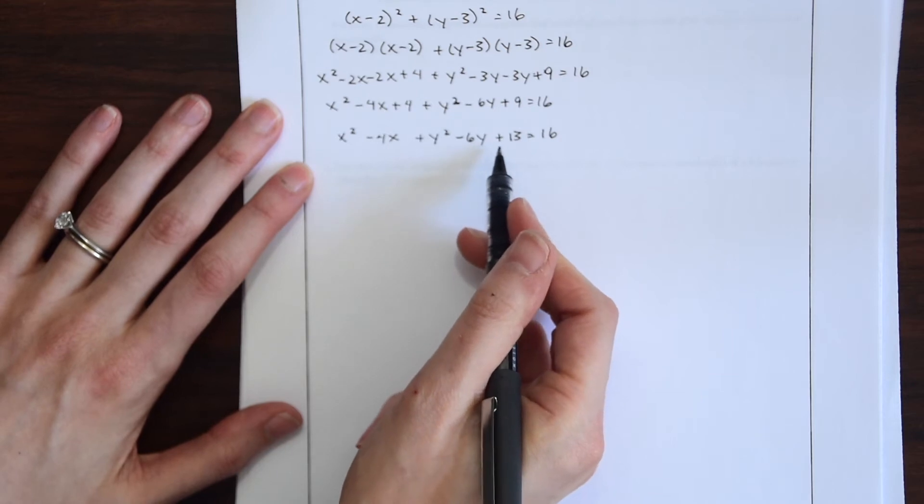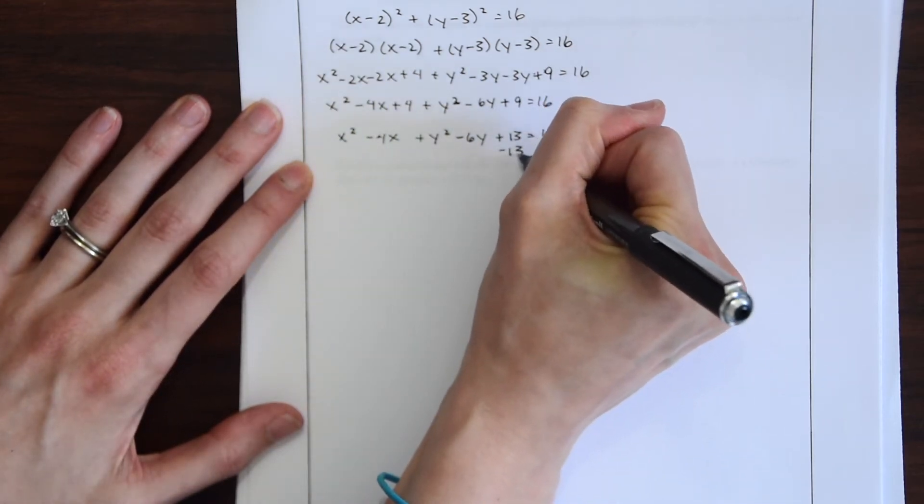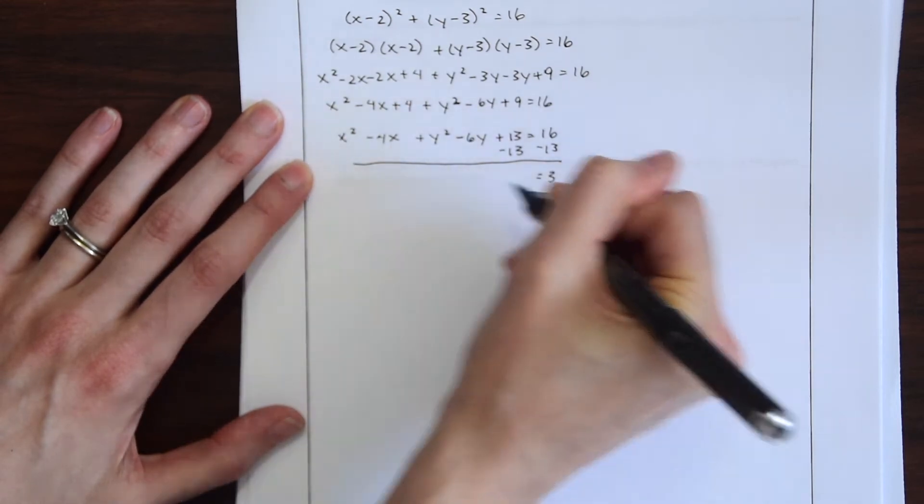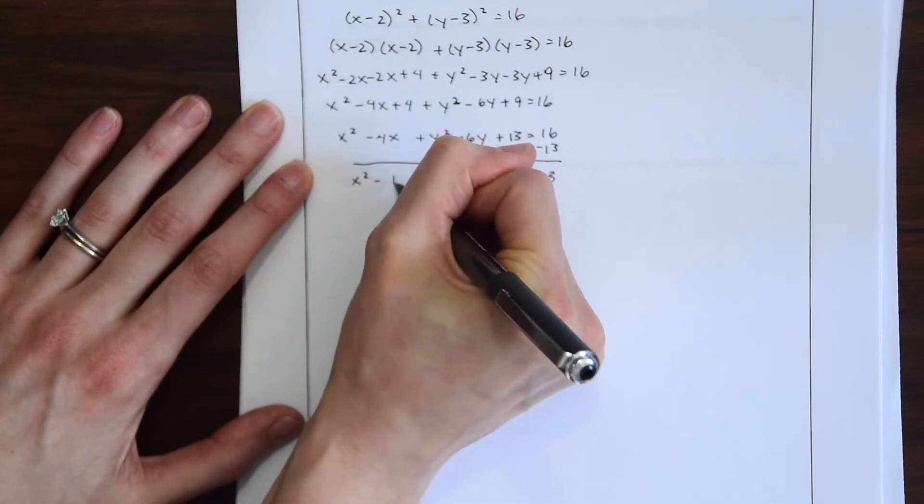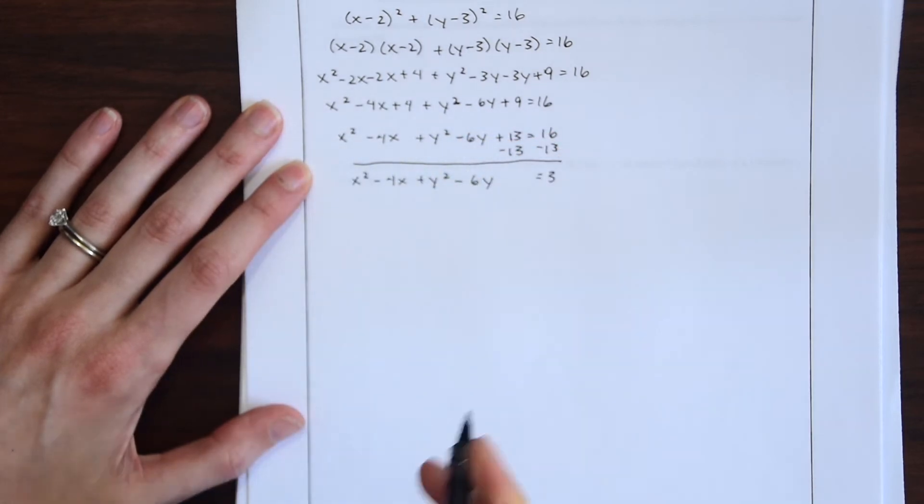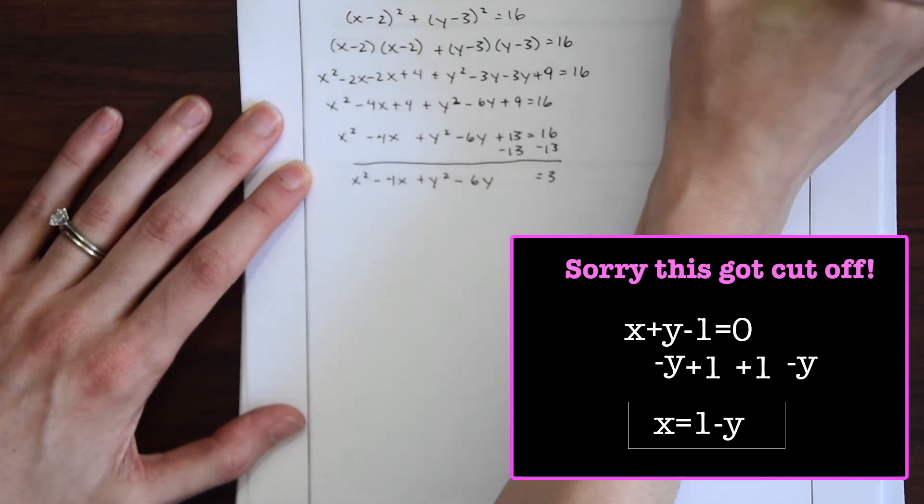So we can actually just take 13 and subtract it from both sides right away and we'll get 3 is equal to x squared minus 4x plus y squared minus 6y. So now is when we can take another look at this little guy and move it around a bit.